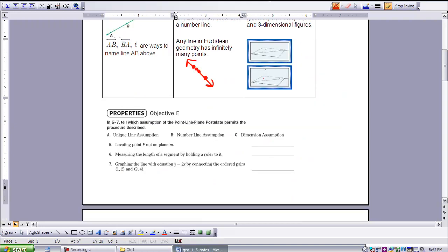I would like you now to stop the video, try these three examples by reading the statement and picking A, B, or C to support that statement. A, B, and C are coming from the point-line-plane postulate. When you have finished, turn the video back on and we will go through each answer.